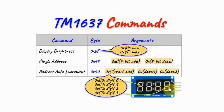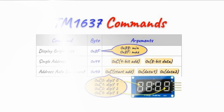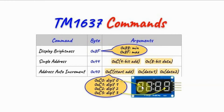To write to the display, we need to program the TM1637 in single address mode by sending the byte 0x44. Afterwards we send an 8-bit address for one of the four digits. The address has the most significant nibble 0xC and the least significant nibble of 0, 1, 2, or 3 — so the first digit is address 0xC0 and the last digit is 0xC3. After sending the digit address, we then send the byte to be displayed on that digit.